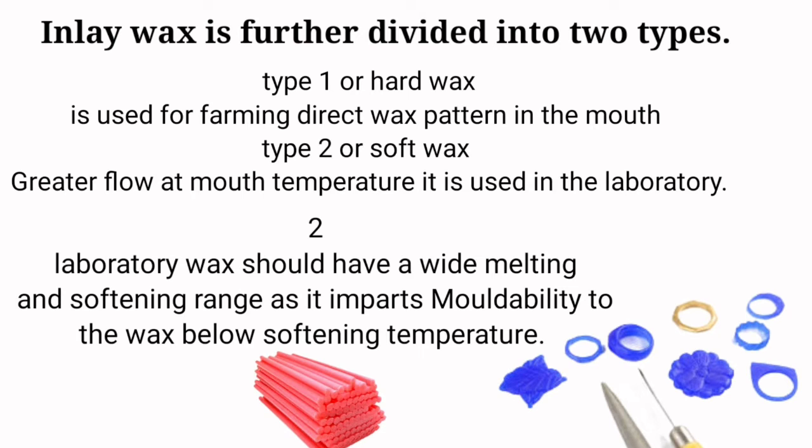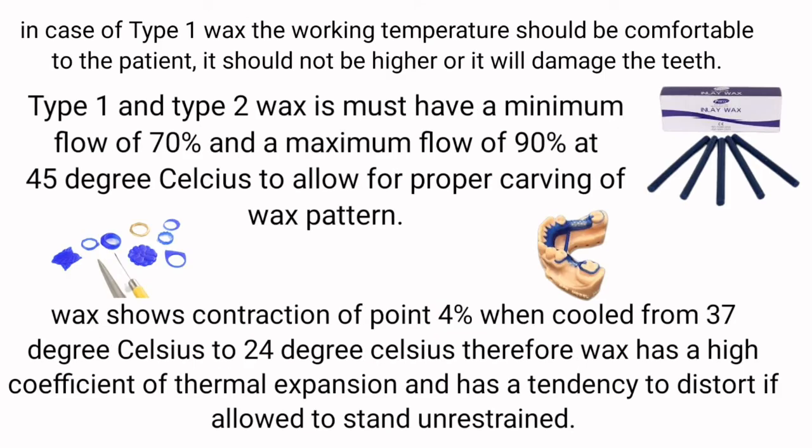Laboratory wax should have a wide melting and softening range, as it imparts moldability to the wax below softening temperature. In the case of Type 1 wax, the working temperature should be comfortable to the patient and should not be higher, or it will damage the teeth. Type 1 and Type 2 wax must have a minimum flow of 70% and a maximum flow of 90% at 45 degrees Celsius to allow for proper carving of the wax pattern.